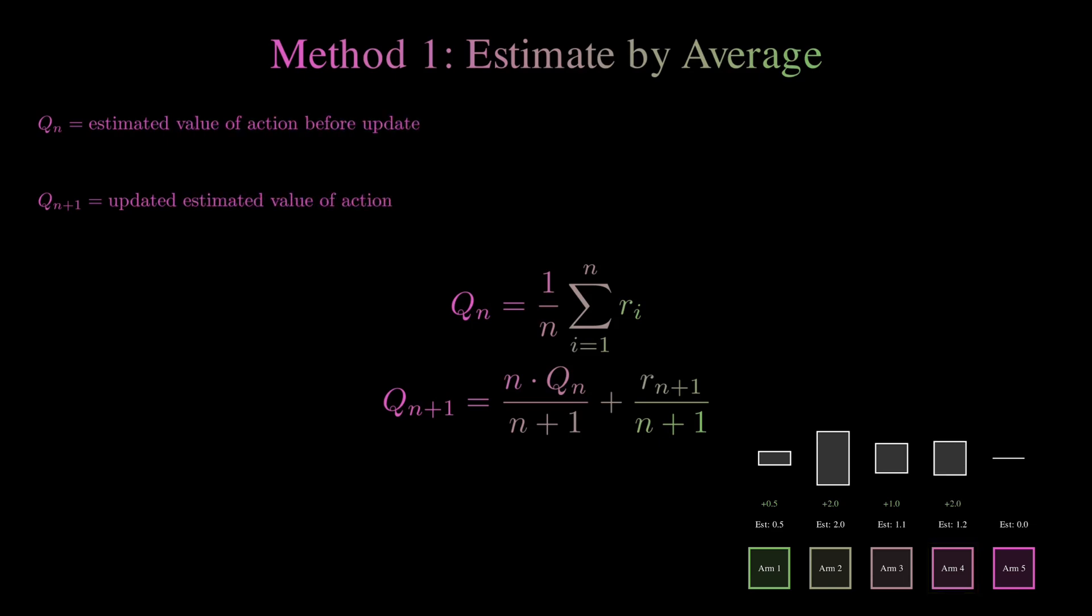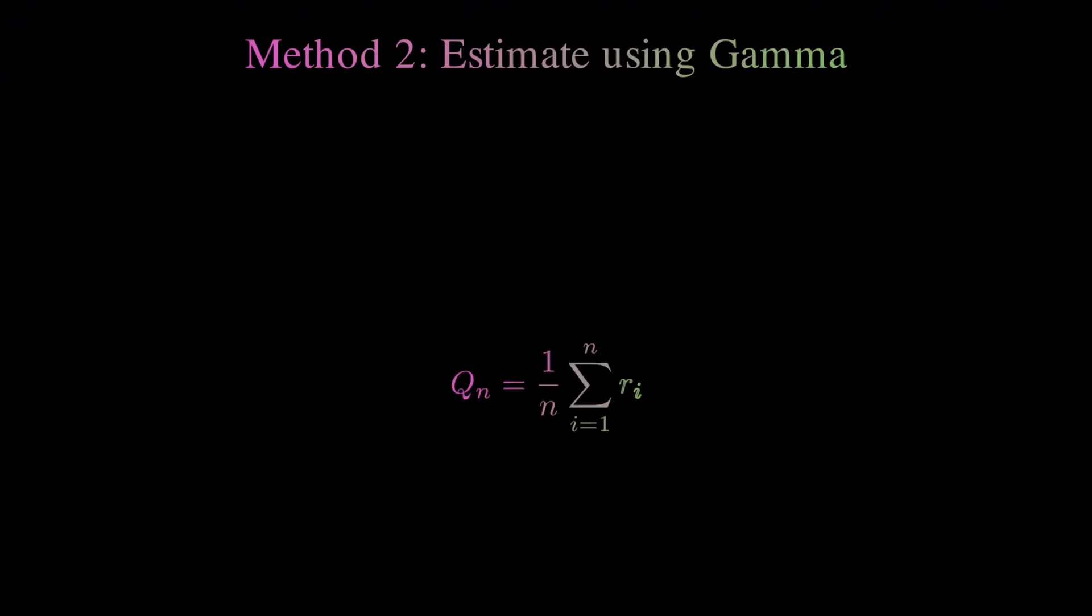So here's where we introduce something a little smarter. Instead of storing all rewards, we can use a recursive relation that updates our estimate without needing to keep everything in memory. So we introduce a new variable, Q of n. And the beauty here is that we don't need to track every single reward, just the current estimate and the new reward we receive. Now, we can take a step further by introducing Gamma. And this is where things get really interesting. Gamma lets us decide how much weight we want to place on the new observation versus the past ones. This balance gives us the ability to fine-tune how much we rely on what happened in the past versus what's happening now.